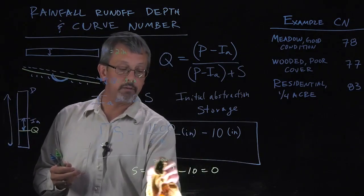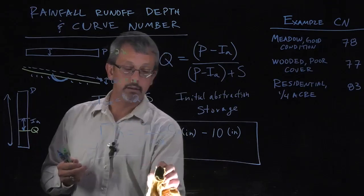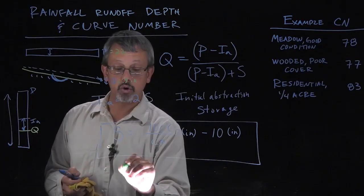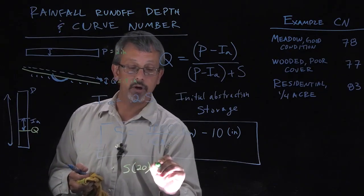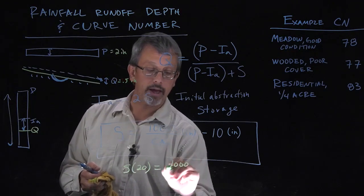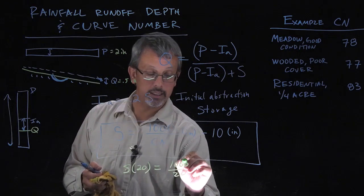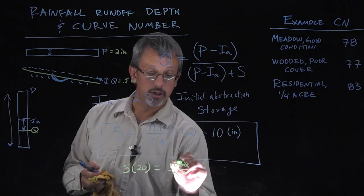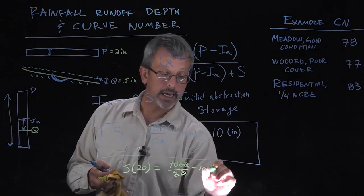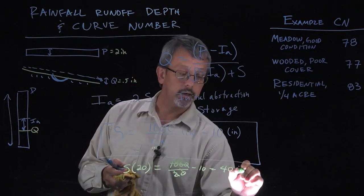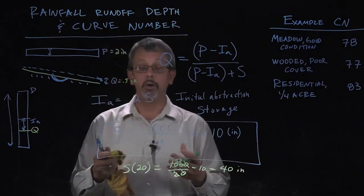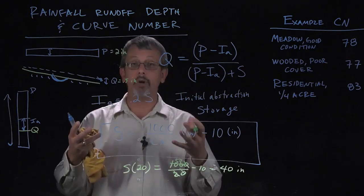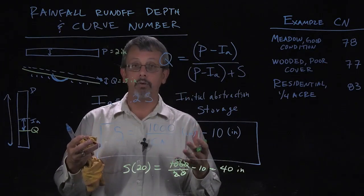If I consider a small curve number of a value of, say, 20, the storage associated with a curve number of 20 would be 1000 divided by 20 or about 50 minus 10 or 40 inches. That's a very low number. If we could store 40 inches of rain, that means very little of it's going to run off.